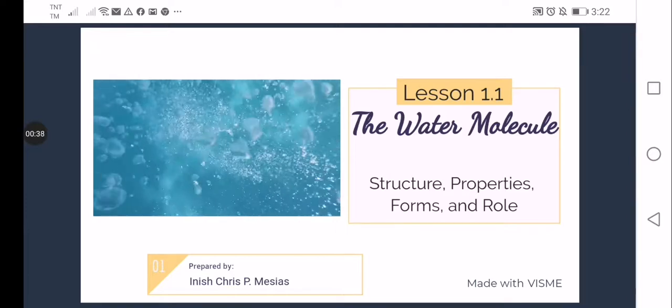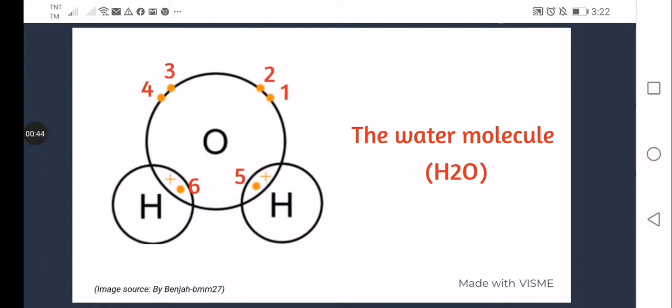As its chemical formula denotes, a water molecule contains one atom of oxygen and two atoms of hydrogen. As you can see in the figure, the oxygen has six electrons as represented by the yellow dots. One, two, three, four, five, and six.